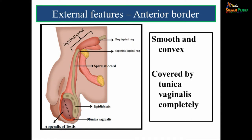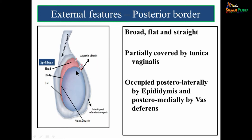Moving on to the borders — the anterior border is smooth and convex and is covered entirely by tunica vaginalis. The posterior border is broad, flat and straight. It is only partially covered by tunica vaginalis. On the posterolateral aspect we have the epididymis, and on the posteromedial aspect we have the vas deferens.